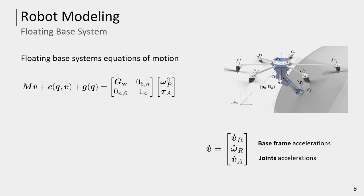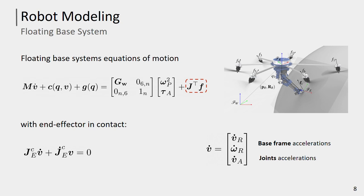We model the robot as a floating-based system. Therefore, we write the floating-based system equations of motion, where M is the mass matrix, C accounts for Coriolis and centrifugal effects, and G is the gravity vector. The system accelerations are composed of the base frame accelerations and the joint accelerations. Omega-squared and tau_A are the propeller square angular velocities and the manipulator joint torques. The robot interaction with the environment, modeled as a rigid contact, is taken into account by complementing the equations of motion with kinematic constraints. The variable F represents the contact forces and moments.